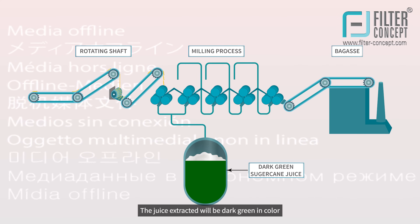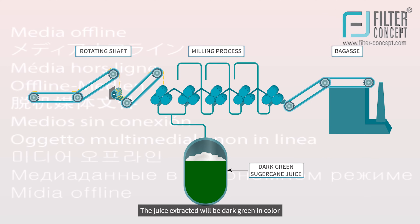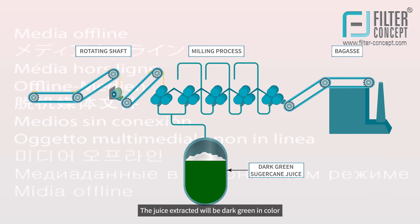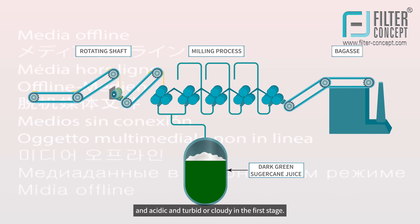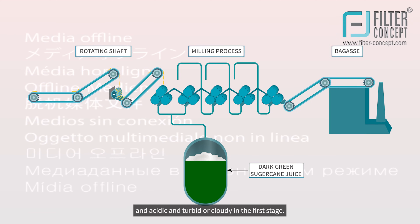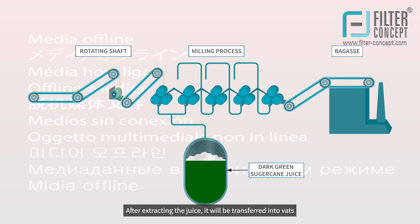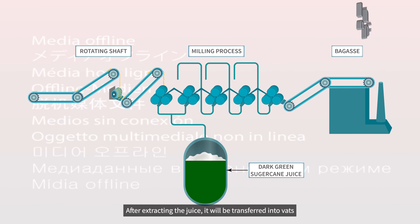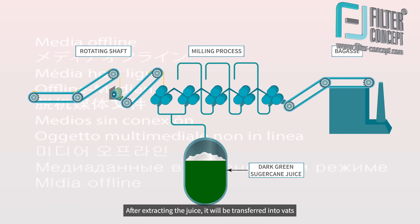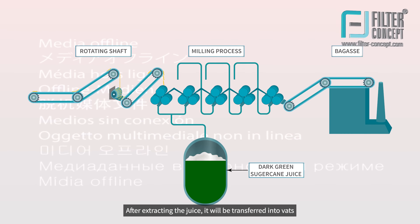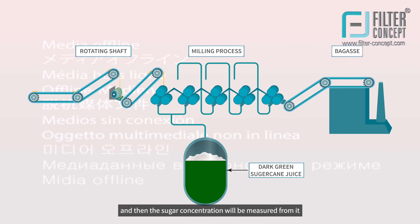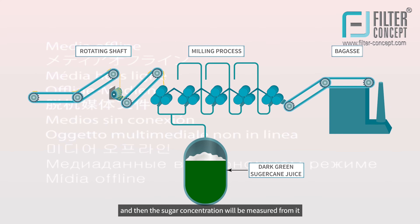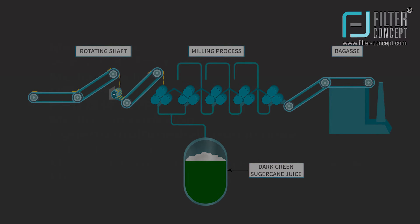The juice extracted will be dark green in color, acidic, and turbid or cloudy in the first stage. After extracting the juice, it will be transferred into vats and then the sugar concentration will be measured.